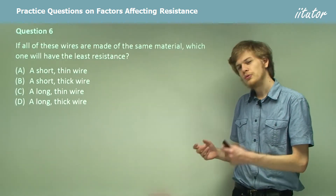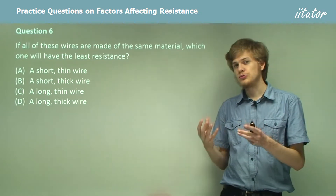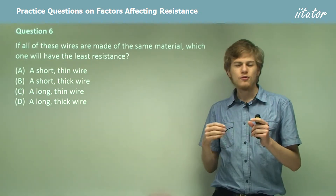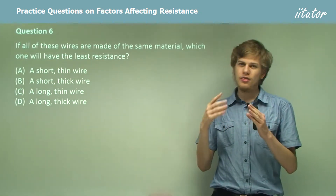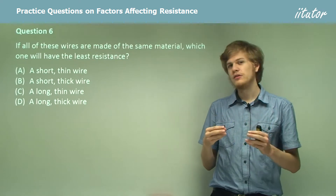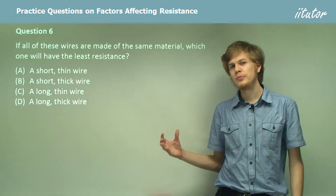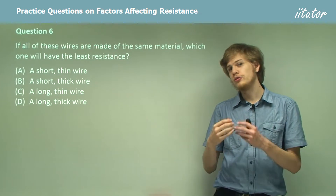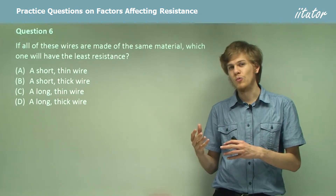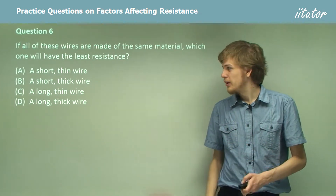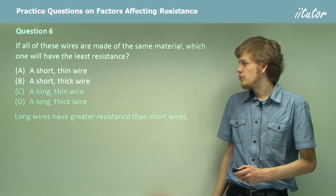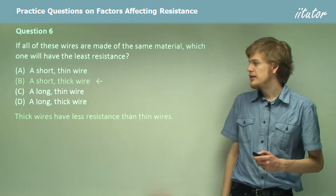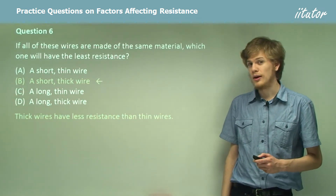So if we want the smallest resistance, we need a very short wire. If the wire was very thin, that would increase the resistance because we wouldn't be able to push many electrons through it. So we want a very thick wire. Our answer then is a short thick wire.